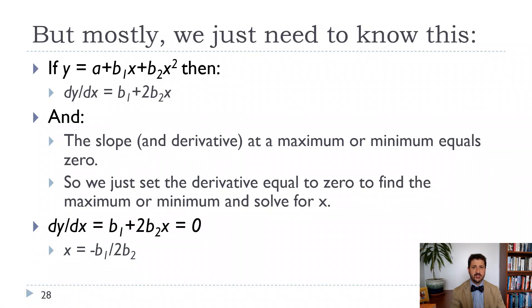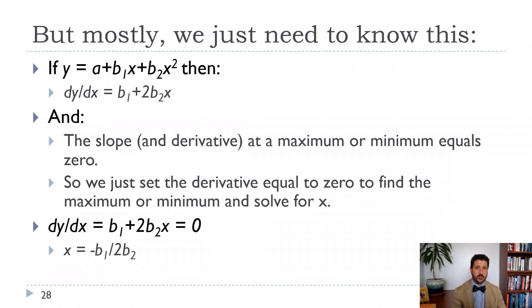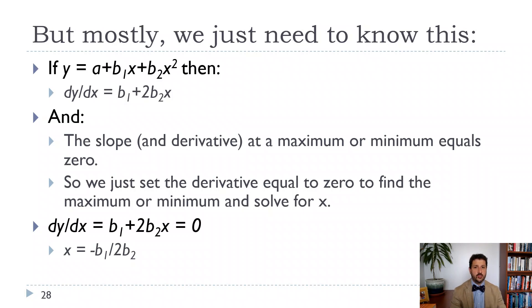Let's do a couple of examples. Often we'll have a quadratic from a profit function: y = a + b1·x + b2·x². Taking the derivative: the constant a becomes zero; b1·x gives just b1; and b2·x² gives 2·b2·x. So the derivative is b1 + 2·b2·x. That is super easy.